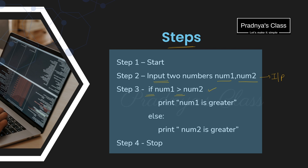Here is the statement: if number 1 is greater than number 2, we will be printing the message 'number 1 is greater.' This message will be printed when the condition is true. Then what about the false part? For that we will be writing the else part. If number 1 is not greater than number 2, ultimately number 2 will be greater. In this way we understood the logic.